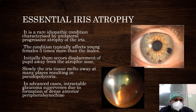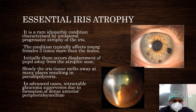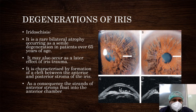Another condition is essential iris atrophy. It is a rare unilateral progressive atrophy of the iris. The condition typically affects young females, five times more than males. Initially there occurs displacement of the pupil away from the atrophy zone. Slowly the iris tissue melts away at many places resulting in polycoria. In advanced cases, intractable glaucoma supervenes due to the formation of dense anterior peripheral synechiae. The degenerations of iris are shown in this picture — you can see multiple iris atrophy patches, and also in UBM, iris atrophic patches are visible.